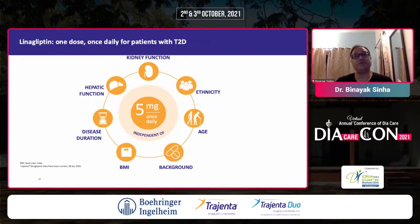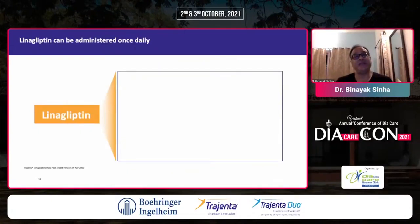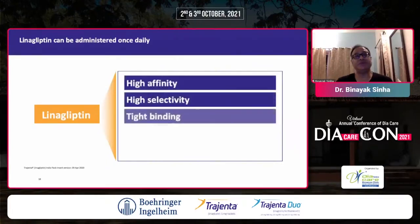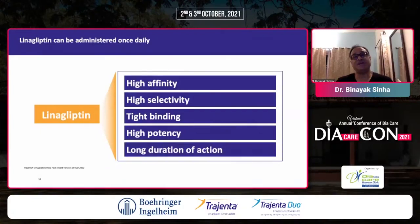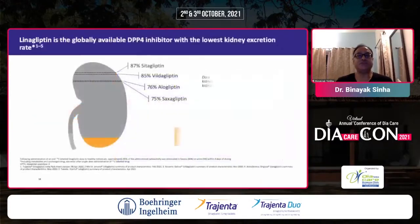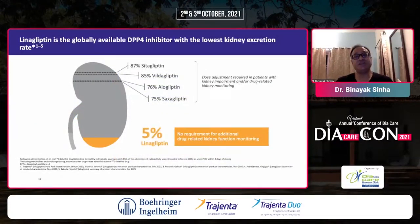This is particularly important in India where many patients get lost to follow-up. It is imperative to put patients on drugs which are safe and can bear the intolerance of no follow-up over a prolonged period. Linagliptin is useful in kidney disease and liver disease, administered once daily due to its high affinity, high selectivity, tight binding to the receptor, high potency, and long duration of action. It has the lowest kidney excretion at only 5%, whereas sitagliptin is 87%, trelagliptin 85%, alogliptin 76%, and saxagliptin 75%.